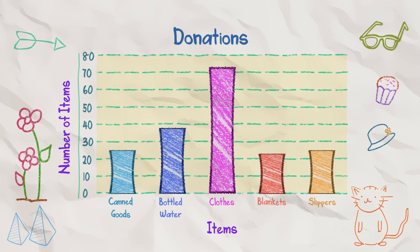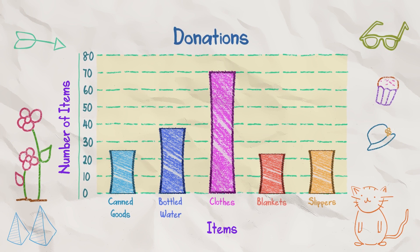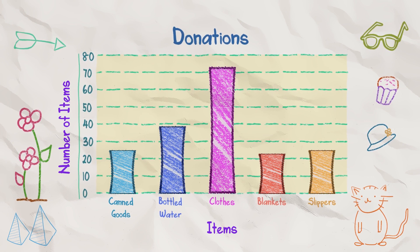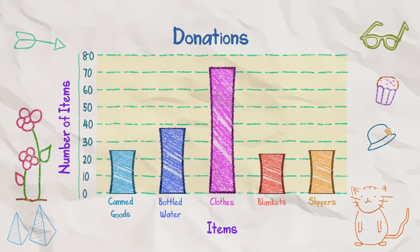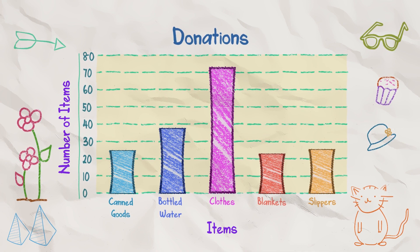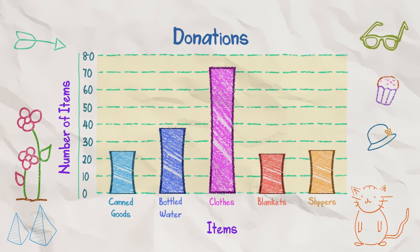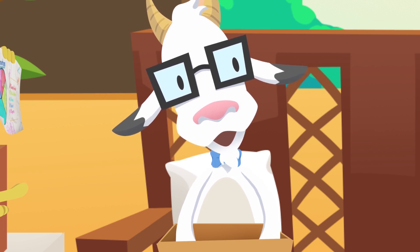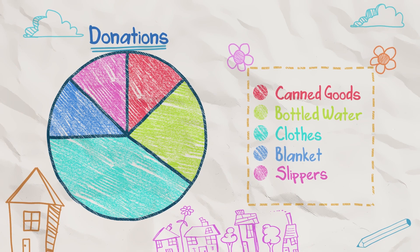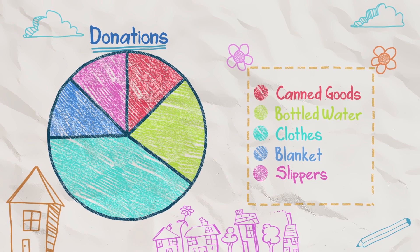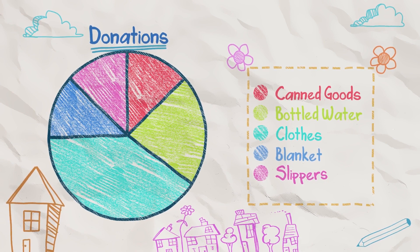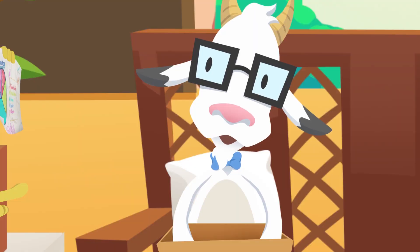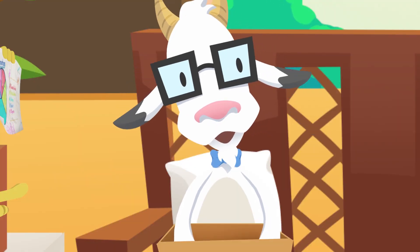Here's the bar graph. As you can see, we have collected a lot of clothes. I think there's enough water. And almost the same number of blankets, slippers, and canned goods. Wow, I can see it clearly. You have the items we donated. In another view, this is the pie chart. You'll notice that almost half of our donations are clothes. Looks great, guys. Nice graphs.